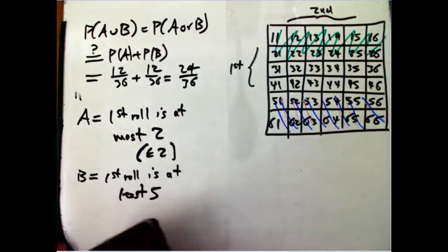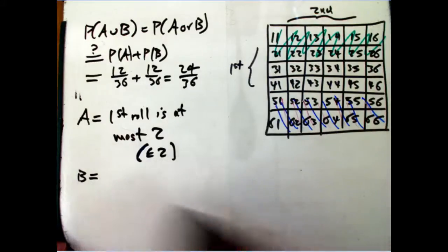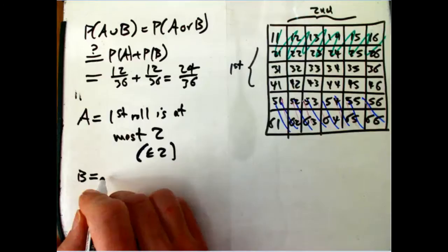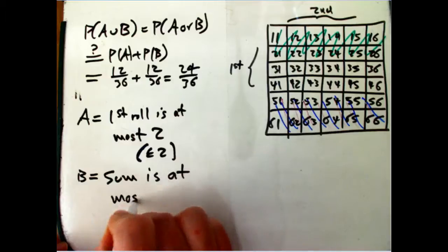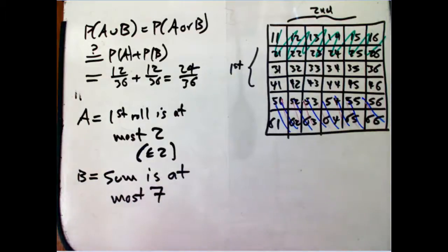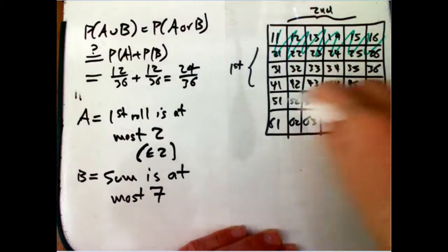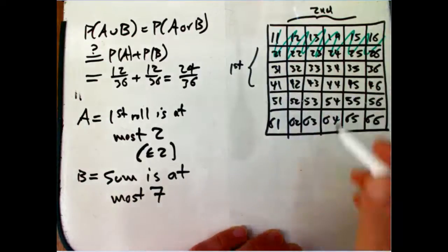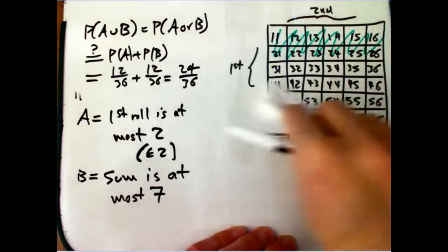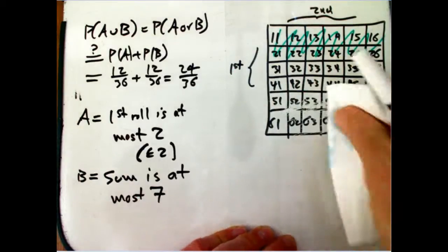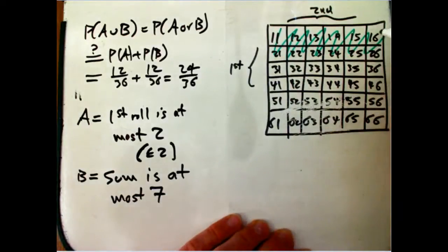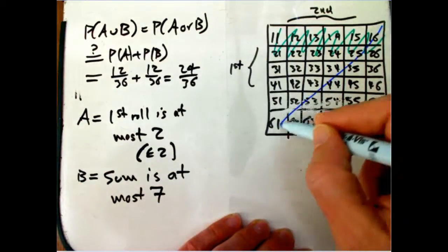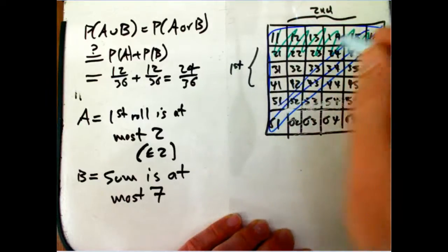However, if we change event B — I don't want to give you the impression that's always that simple. Let's change event B to be the sum of the two dice is at most 7. That's going to change things. The sum is at most 7 — that's everything above this diagonal. And now there's an overlap between the two events.